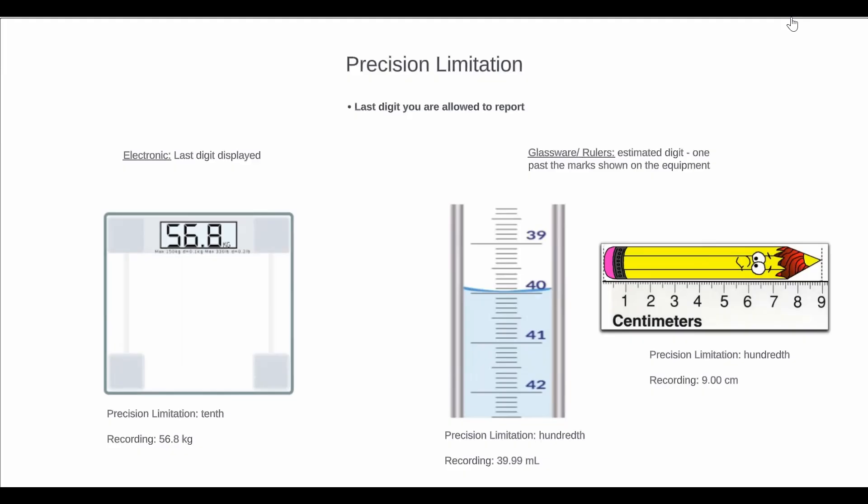So now let's talk about precision limitation. This is the last digit you're allowed to report. So for both electronic and glassware, they both have different rules.